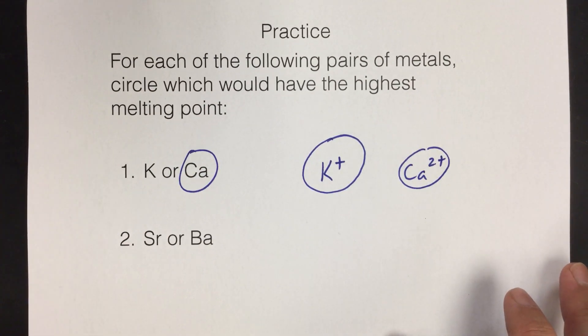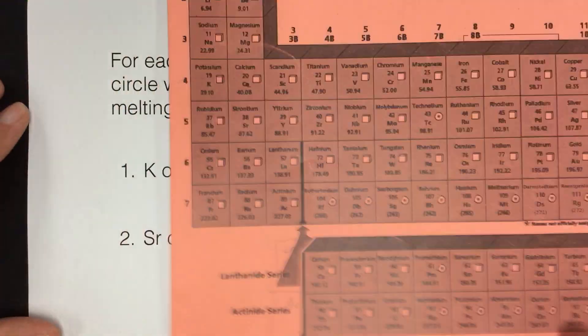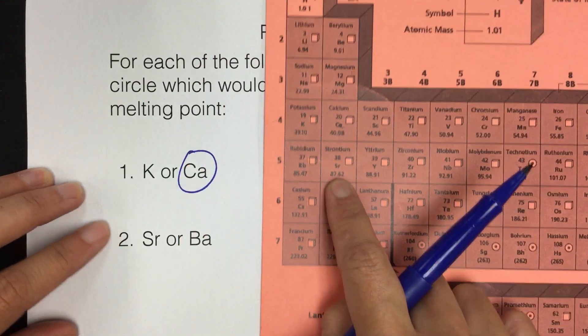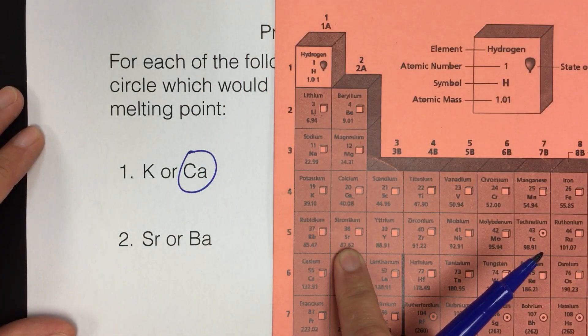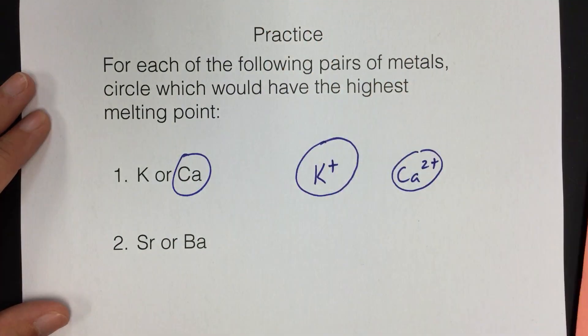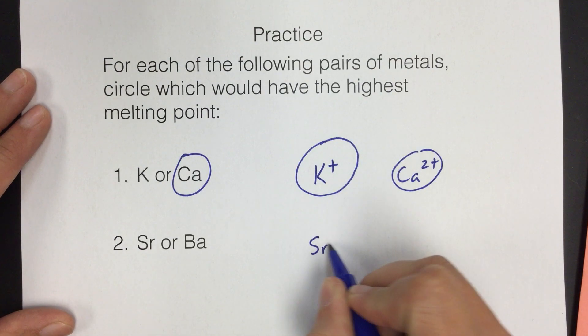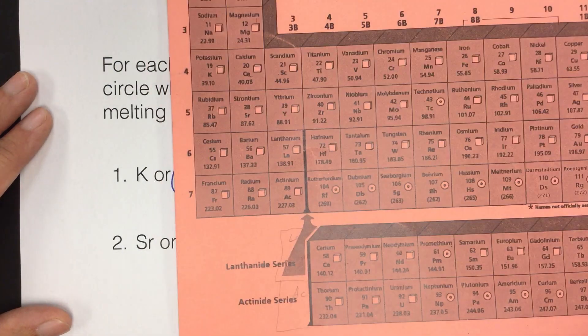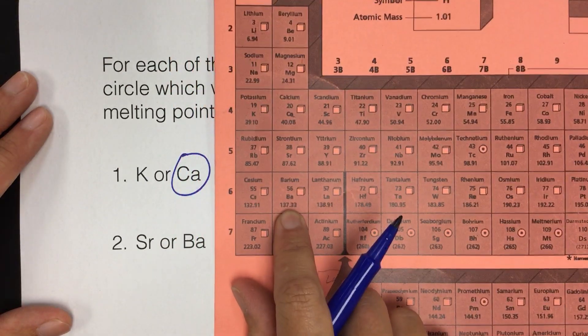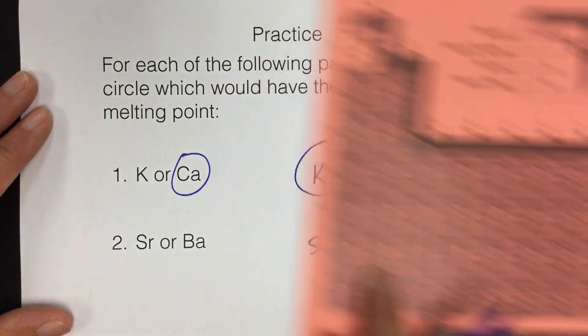The next two to compare, strontium and barium. Here we have strontium, also an alkaline earth metal, so I know the charge is going to be 2 plus. And then barium, here also an alkaline earth metal, so also 2 plus.